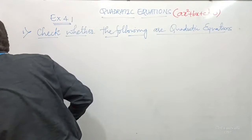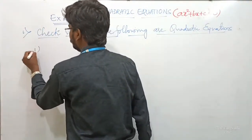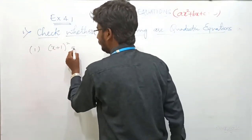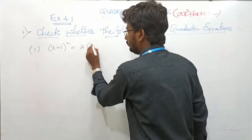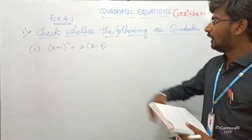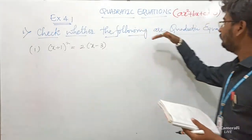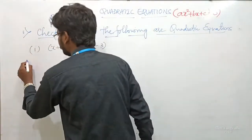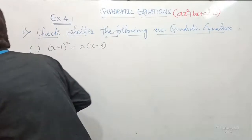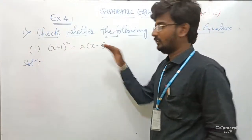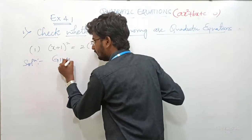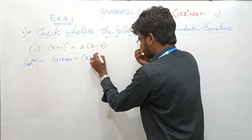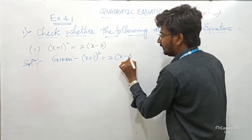Coming to the first question: (X + 1)² = 2(X − 3). This is the equation. We have to check whether this equation is in the form of a quadratic equation or not. Given: (X + 1)² = 2(X − 3).